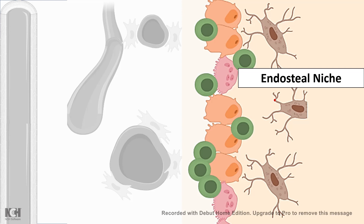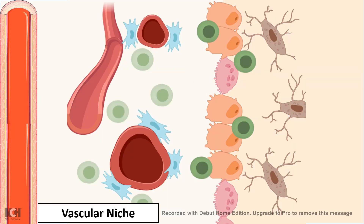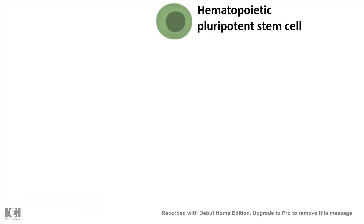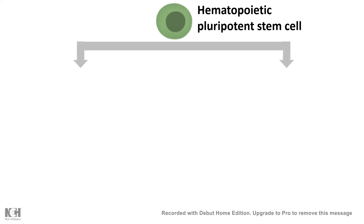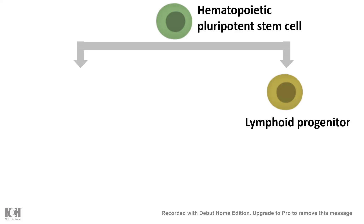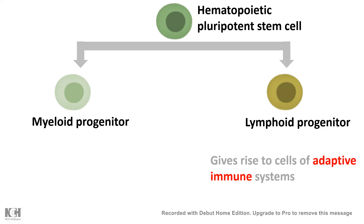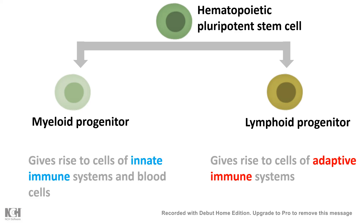The endosteal niche has different signaling molecules and morphogens — especially cytokines — secreted to support the growth of the colony of hematopoietic pluripotent stem cells. Once HSCs start differentiating into different cell types, they move from the endosteal niche to the vascular niche, and from there they circulate throughout the body. The hematopoietic pluripotent stem cell can differentiate while still retaining stem cell-like properties, giving rise to two key progenitor populations: lymphoid progenitors and myeloid progenitors. Myeloid progenitors give rise to the innate immune system, whereas lymphoid progenitors give rise to the adaptive immune system.